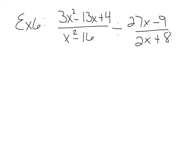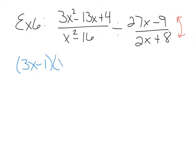Example 6, still on page 147: 3x squared minus 13x plus 4 over x squared minus 16, divided by 27x minus 9 over 2x plus 8. Since this is division, we keep the first fraction, change to multiply, and flip the second fraction. This trinomial is not standard because of the leading coefficient of 3, so you'll need to use the AC method, slide and divide, trial and error, or whatever method you learned.